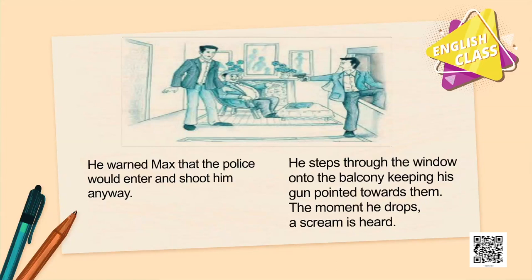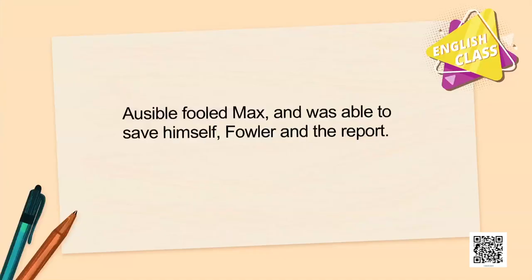Suddenly a scream is heard. Ossible opens the door and a waiter is standing outside with wine and glasses. Fowler is shaken — where's the police? Oh, there is no police, only Henry, whom Ossible was expecting. But the man on the balcony? You see, my friend — there is no balcony. So how did you like the chapter? Ossible had fooled Max and was able to save himself, Fowler, and the report.